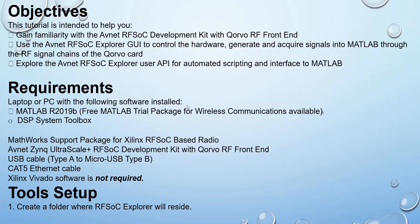Requirements: a laptop or PC with the following software installed — MATLAB 2019b, free MATLAB trial package for wireless communications, DSP System Toolbox, network support package for Xilinx RF SOC based radio, AppNet Zynq Ultrascale Plus RF SOC development kit with CORBO RF front-end, USB cable, and Cat5 Ethernet cable. Xilinx Vivado is not required.